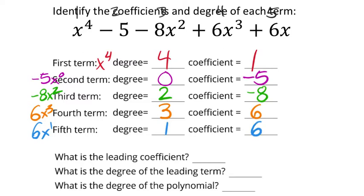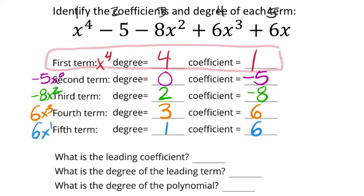The leading coefficient: find the highest degree term, which is x⁴ up at the top. Its coefficient was one (the phantom one). The degree of that term is four — the highest among all terms — so the degree of the polynomial is four, matching the degree of the leading term.